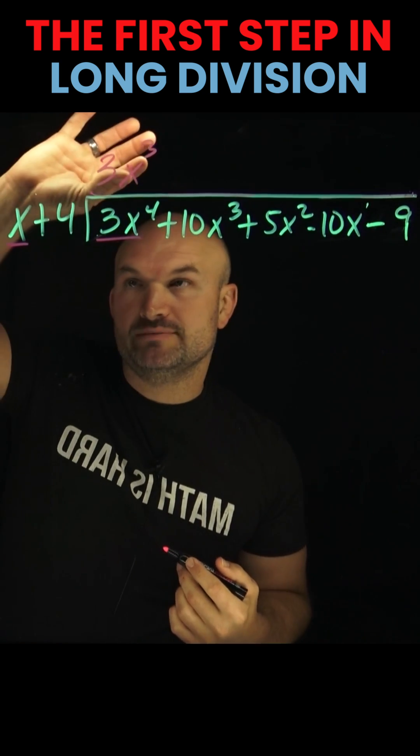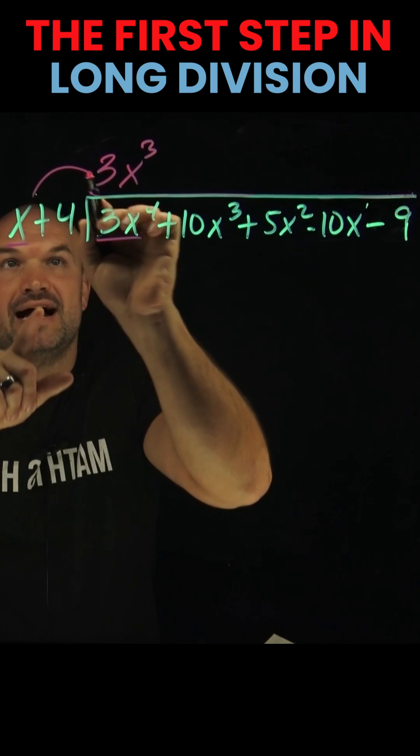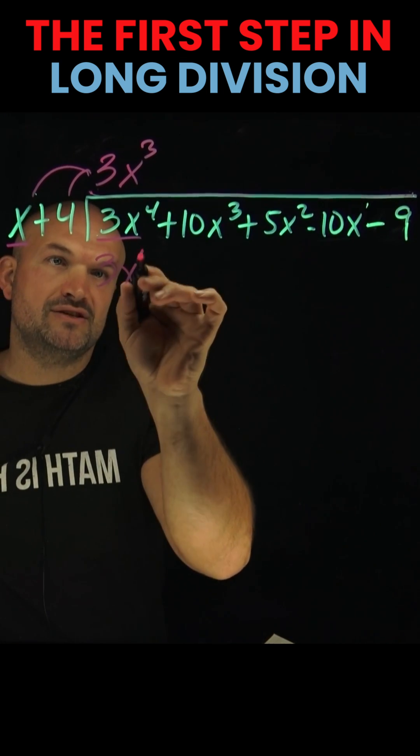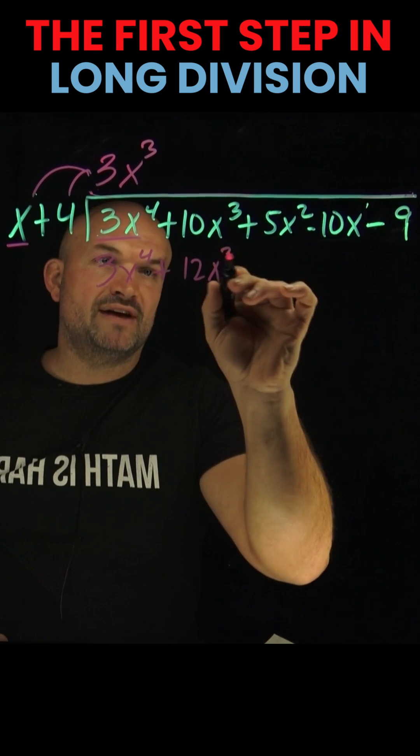Then take the first term of your quotient and multiply it times every term of your divisor. 3x cubed times x is 3x to the fourth. 3x cubed times 4 is positive 12x cubed.